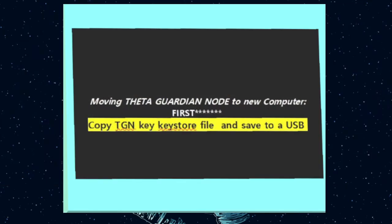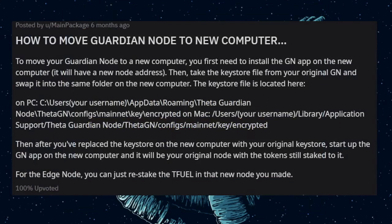Next is moving your Guardian Node to a new PC. Before you do anything, copy your Theta Guardian Node keystore file and save it to a USB — this is the most important step. If you do not have your keystore file when moving, you are not going to be moving your Theta Guardian Node anywhere. Your keystore file is located at: C:\Users\[username]\AppData\Roaming\theta-guardian-node\theta-gn\configs\mainnet\key\encrypted. Copy that and save it to a USB.